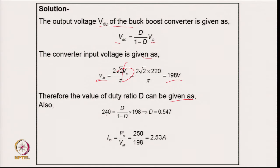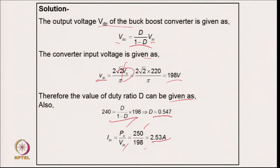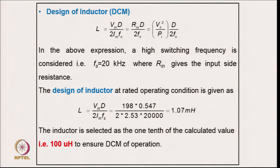The duty ratio is calculated from the buck-boost relation. Putting in the values gives D = 0.547, which is above 0.5, indicating buck-boost operation in boost mode. The average input current is output power divided by average input voltage after the diode rectifier: 500 / 198 = 2.53 A.